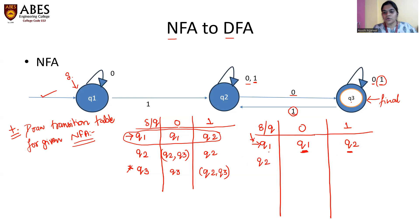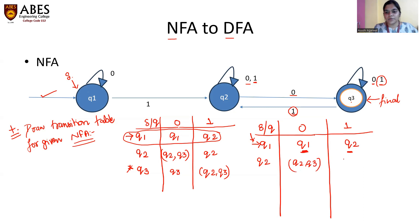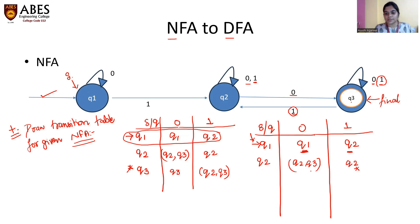Now let's write the transition for state Q2. From Q2 with input 0, it goes to Q2 and Q3. With input 1, it comes back to Q2. Among these resulting states — Q2, Q3, and Q2 — we are already working on Q2, so that is not new. Our new state is the combination Q2,Q3. We will read this combination as a new single state.